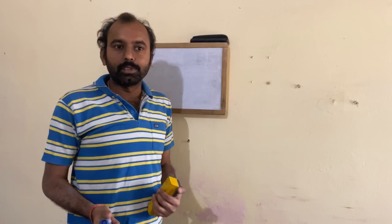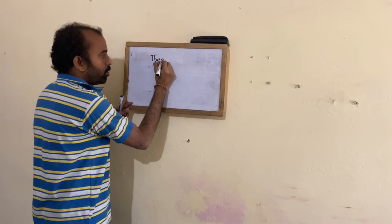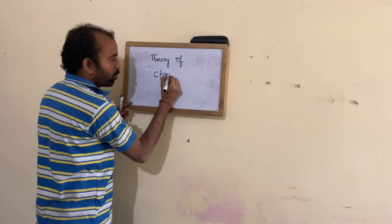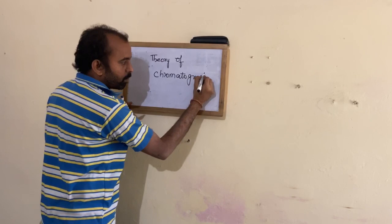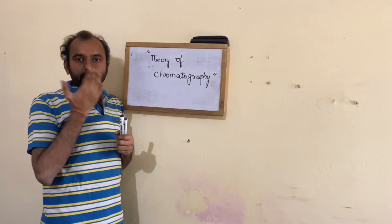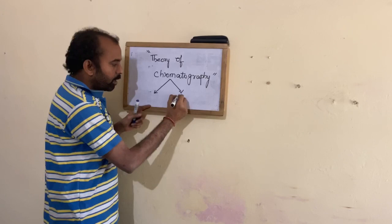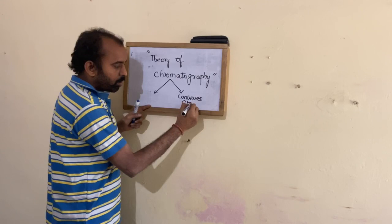In today's lecture, I am going to deal with the concept of the theory of chromatography. The theory of chromatography explains how the separation process progresses from the initial stage to the final stage. In this theory, you need to know there are two systems: one is a continuous chromatographic system, and one is a complete chromatographic system.